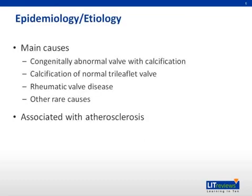There are three main causes of valvular aortic stenosis. The first main cause is calcification of a congenitally abnormal aortic valve, typically either bicuspid or unicuspid. Bicuspid aortic valves are the most common congenital heart defect with a prevalence between 0.5% and 2%, and they typically affect males to females in a 3 to 1 ratio.